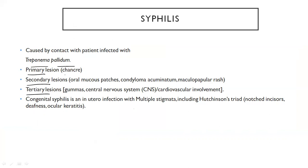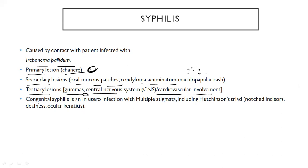In primary lesion, you can see a canker — that is a whitish-red lesion. In secondary lesions, you can see oral mucosal patches, condyloma acuminatum — which is warts seen in the genital region — and maculopapular rashes all over the body. Tertiary lesions are the gummas, mostly seen in the liver but can be seen in other places also.